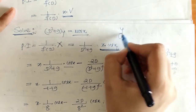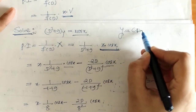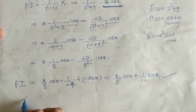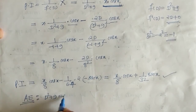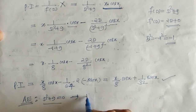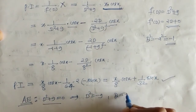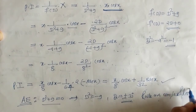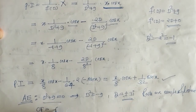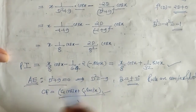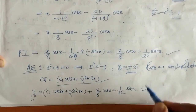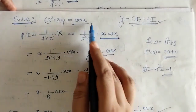We are given to solve the full differential equation, so y = CF + PI. For CF, the auxiliary equation is D² + 9 = 0, giving D = ±3i. The roots are complex and distinct, so CF = c₁·cos(3x) + c₂·sin(3x). Therefore the complete solution is y = c₁·cos(3x) + c₂·sin(3x) + (x/8)·cos(x) + (1/32)·sin(x).